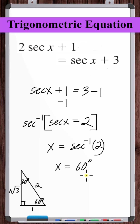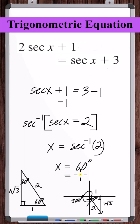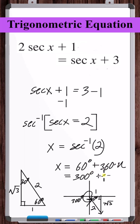We know there are going to be two angles between 0° and 360° whose secant equals 2. Secant is positive in the first and fourth quadrants because the adjacent side is positive there. The angle in the fourth quadrant with reference angle 60° is 300°. So the solutions are 60° and 300°, plus any coterminal angle — that is, plus 360° times n, where n is any integer.